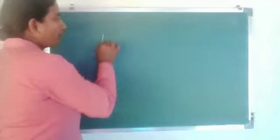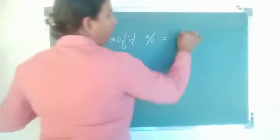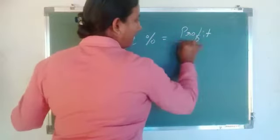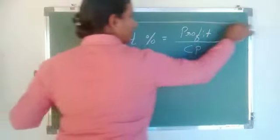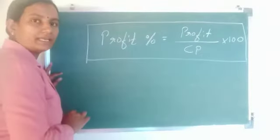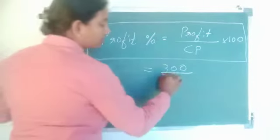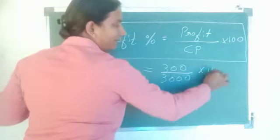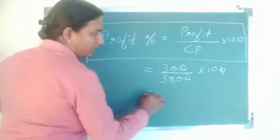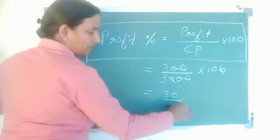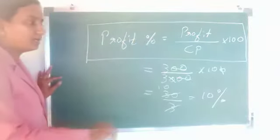Now using this we can find profit or gain percentage. Profit percentage equals profit divided by cost price into 100. Profit is 300, CP is 3000, into 100. Cancel two zeros: 300 by 3000 into 100 simplifies to 10. So profit percentage is 10%.